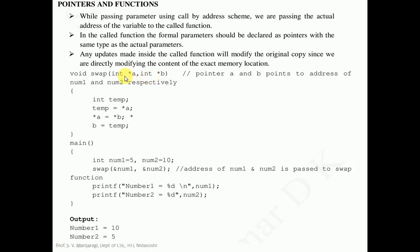The first parameter is int star a. The asterisk is indicating a as a pointer. Similarly, we are taking the second parameter as a pointer that is int star b. So this swap function is taking two parameters, and the definition of this particular function is that we want to swap the values of a and b using pointers.